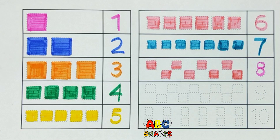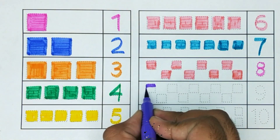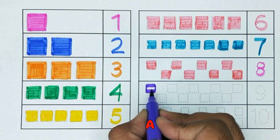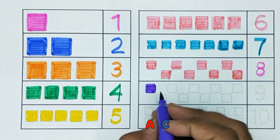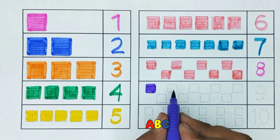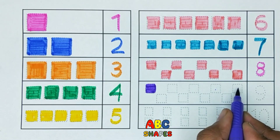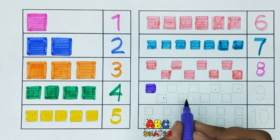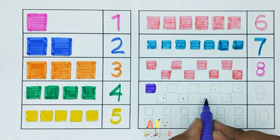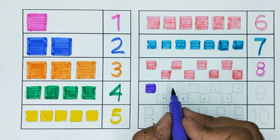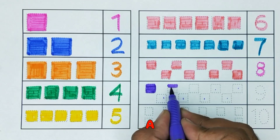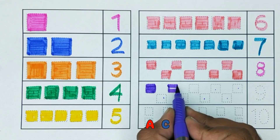Now we have 9 squares. 1, 2, 3, 4, 5, 6, 7, 8, 9 — 9 squares.